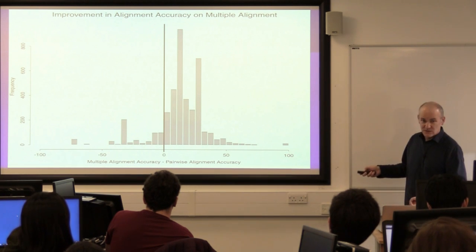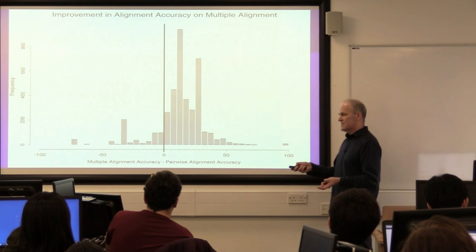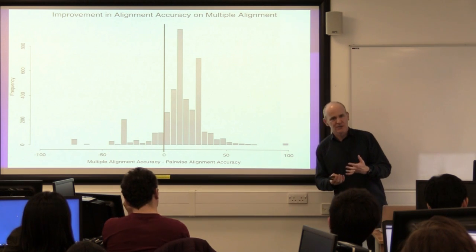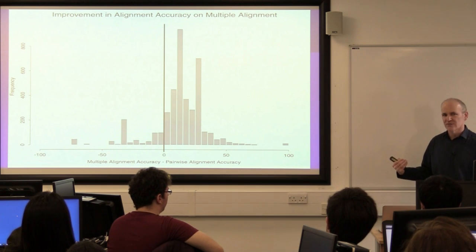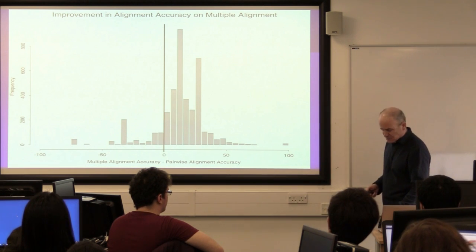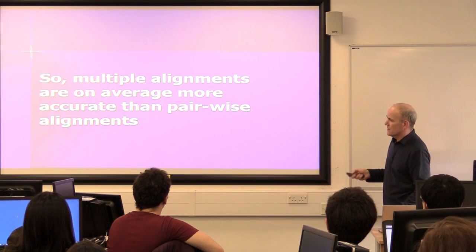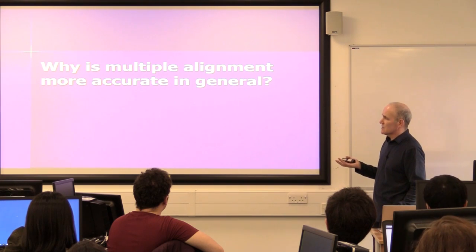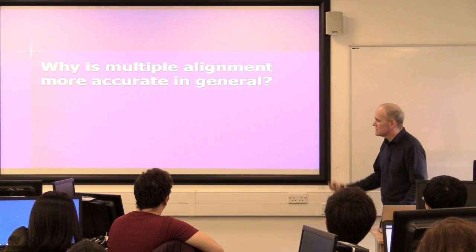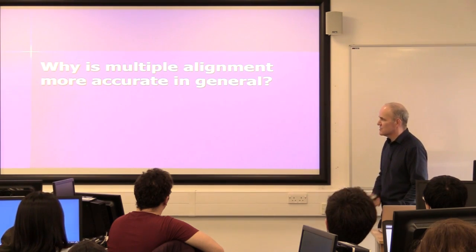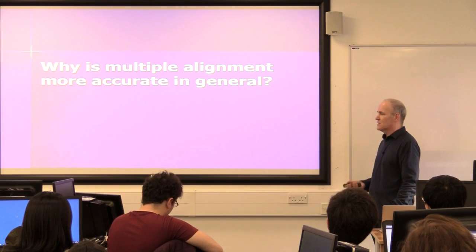There are some that get a lot worse, so you might be unlucky with your multiple alignment. But usually you can see this when you look at the alignment — you can see a sequence that's really quite different and shouldn't be included. So multiple alignments are on average more accurate than pairwise alignments. Why is that? You're using profiles which capture information about what's important in the alignment.